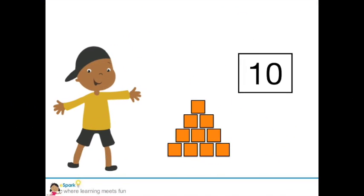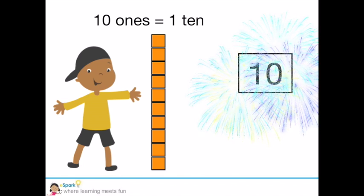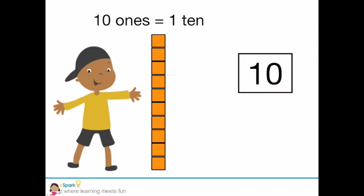Look at the pyramid I built with these 10 blocks. Pretty cool, right? 10 ones equals 1 group of 10. Now, I have a group of 10 and 0 extra ones.